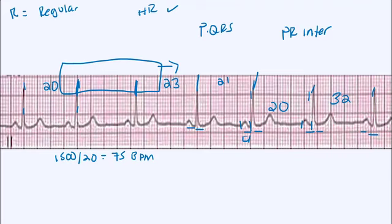If you remember, each small box is 0.04 seconds. So we would multiply four times 0.04 seconds, and we would have 0.16 seconds. So our PR interval is four small boxes or 0.16 seconds, which is also within the normal range.